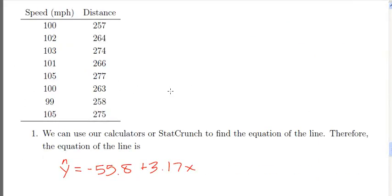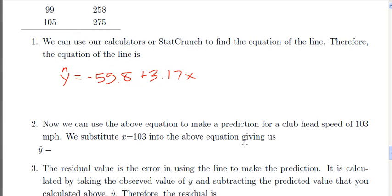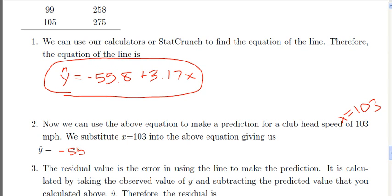We can use that line to make a prediction for X. Suppose we wanted to make a prediction for a club head speed of 103. So that means since speed is our explanatory variable, X is equal to 103, and we want to make a prediction. We want to figure out what Y hat is equal to. So all I do is substitute 103 into this equation right here. So I have negative 55.8 plus 3.17, that's our slope, times 103. That's the value we're trying to make a prediction for. This gives us 270.71, and our units are yards. So that's our prediction.